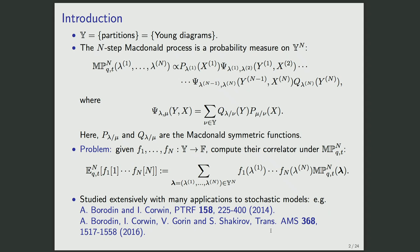Today, the n-step Macdonald process is a probability measure on the n-fold product of Y. The probability weight for a sequence of partitions is given by a product, where psi_{lambda/nu} is given by a formula involving P and Q, the Macdonald symmetric functions labeled by skew partitions. Under this setting, any function on Y is regarded as a random variable. The problem is to compute a correlator of given random variables under this probability measure.